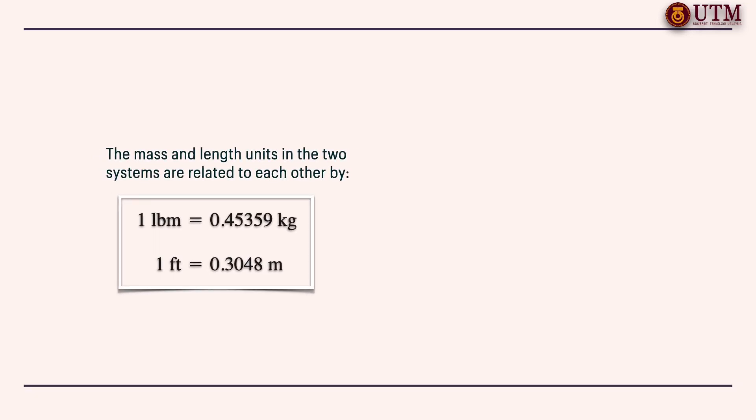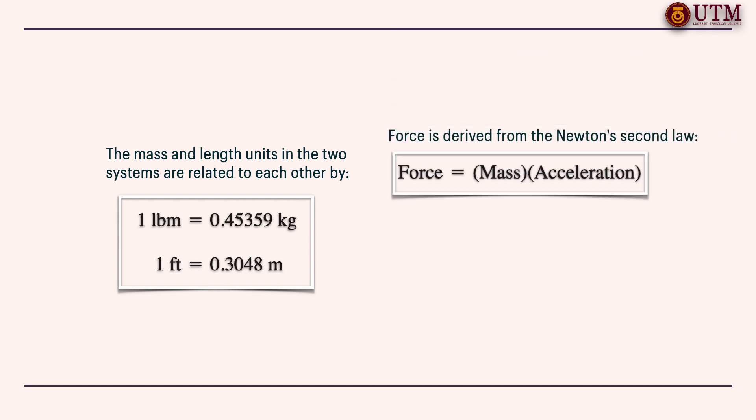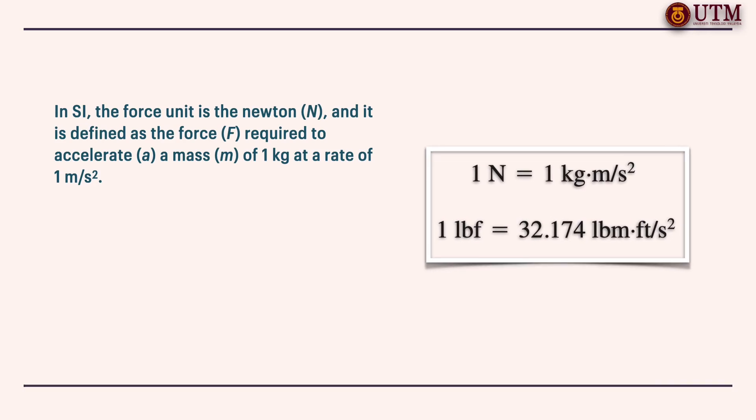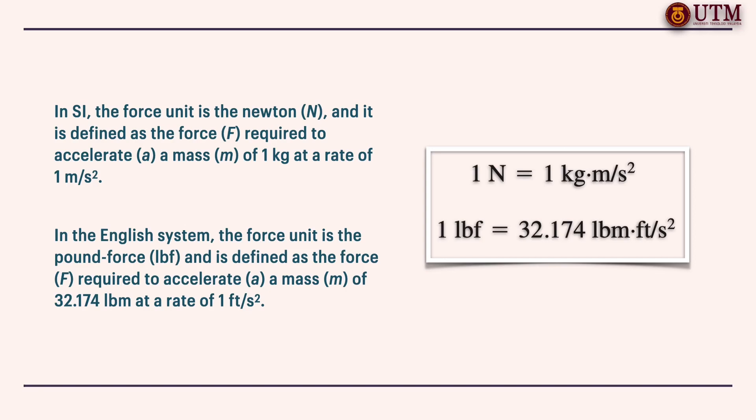The mass and length units in the two systems are related to each other by specific factors. Force is considered to be a secondary dimension whose unit is derived from Newton's second law. In SI, the force unit is the Newton and it is defined as the force required to accelerate a mass of 1 kilogram at the rate of 1 meter per square second. In the English system, the force unit is the pound force and it is defined as the force required to accelerate a mass of 32.174 pound mass or it is equal to 1 slug at the rate of 1 foot per square second.